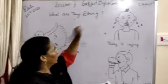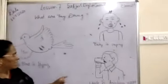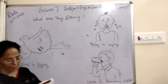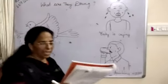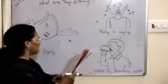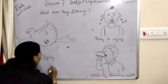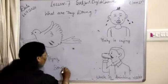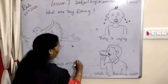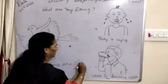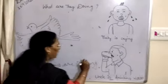And what are they doing? This lesson says: What are they doing? The baby is crying. Angli is drinking water. The boys are playing. Who is playing? The boys are playing.